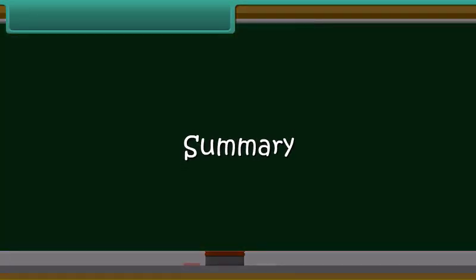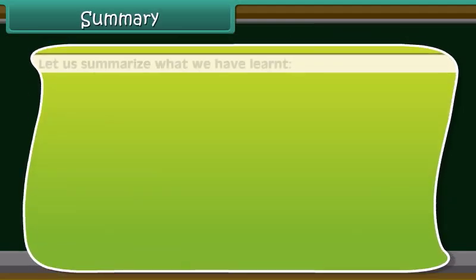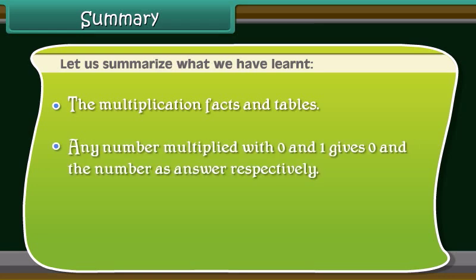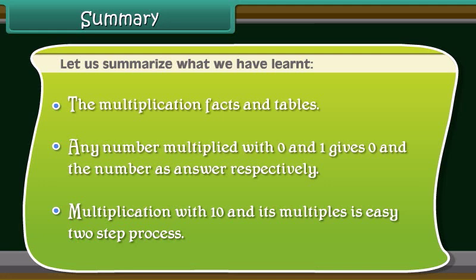Let us summarize what we have learned. The multiplication facts and tables. Any number multiplied with 0 and 1 gives 0 and the number as answer respectively. Multiplication with 10 and its multiples is easy two-step process.